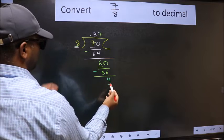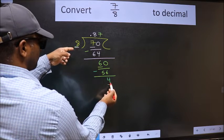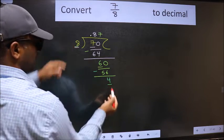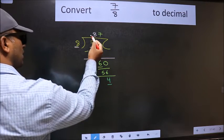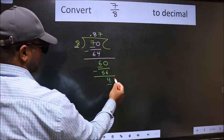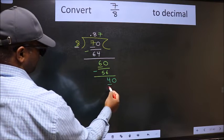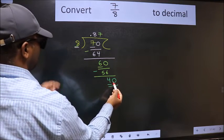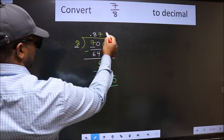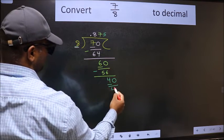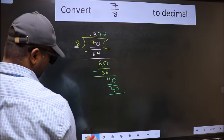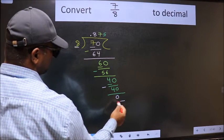Now here we have 4 and here 8. 4 is smaller than 8, and we already have the decimal, so we can directly take 0. So, 40. When do we get 40 in the 8 table? 8 fives, 40. Now we should subtract. We get 0.